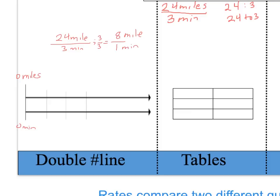Using the double number line, I can go ahead and put the unit rate on the first line: eight miles per one minute. Now that I have that unit rate built, I can use the double number line to figure out other rates. I can scale up — multiply by three — so I would get 24 miles on top and three minutes on the bottom. Or I can scale up again, multiply by four, and get 32 miles and four minutes. You can use the double number line to figure out other rates for a given unit rate.